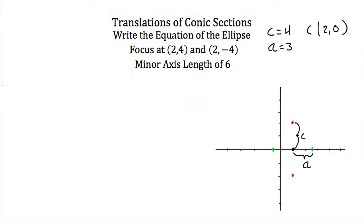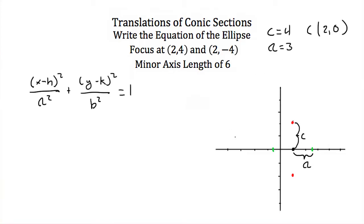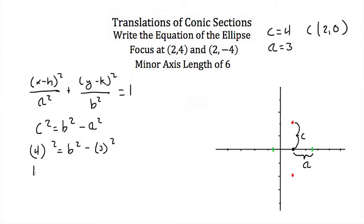We want the standard equation for an ellipse, which after translation is (x - h)²/a² + (y - k)²/b² = 1. I have a, and I have h and k — all I need is b. The y direction is our major axis, so we find b using the equation c² = b² - a². With c = 4 and a = 3: 16 = b² - 9, so b² = 25, meaning b is equal to 5.